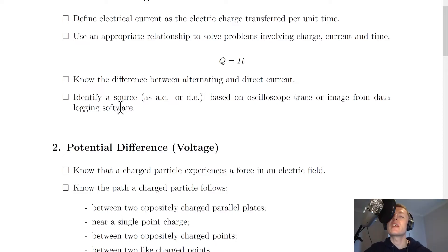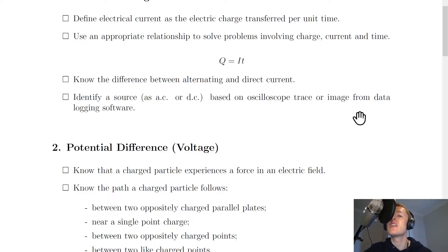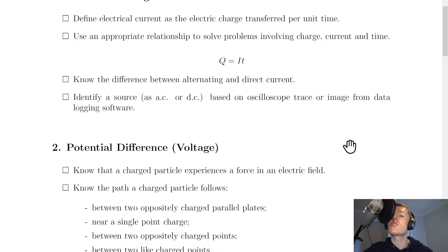Lastly for section one, you need to identify a source as AC or DC based on oscilloscope traces or data logging software. The oscilloscope trace for DC is a straight line showing a constant output voltage, whereas the oscilloscope trace for an AC source shows a wave pattern, indicating an alternating voltage.